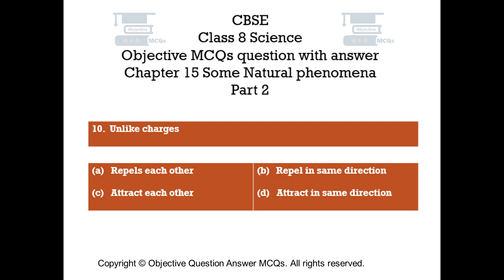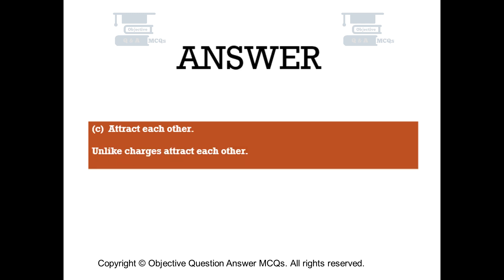Question number 10: Unlike charges. Option A: Repel each other. Option B: Repel in the same direction. Option C: Attract each other. Option D: Attract in the same direction. The right answer is Option C — attract each other. Unlike charges attract each other.